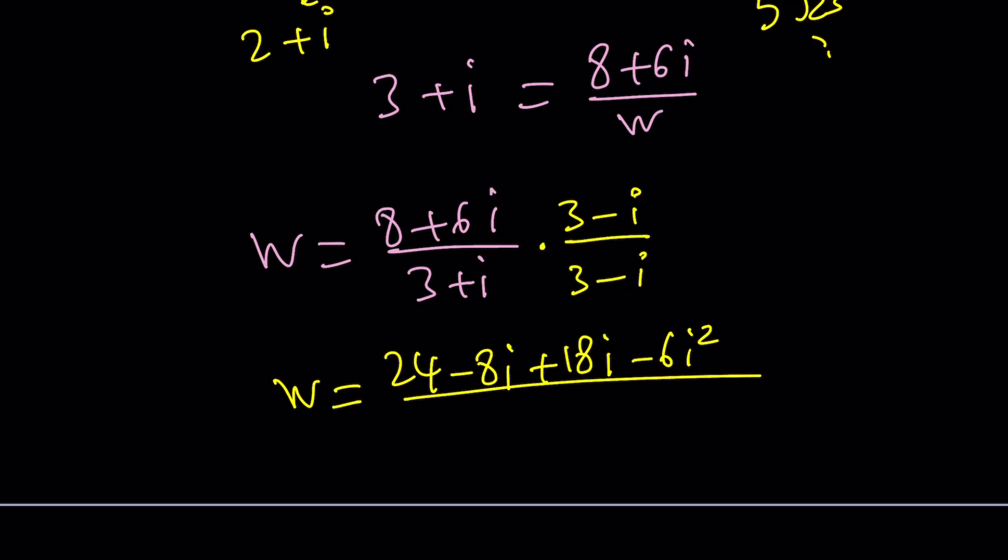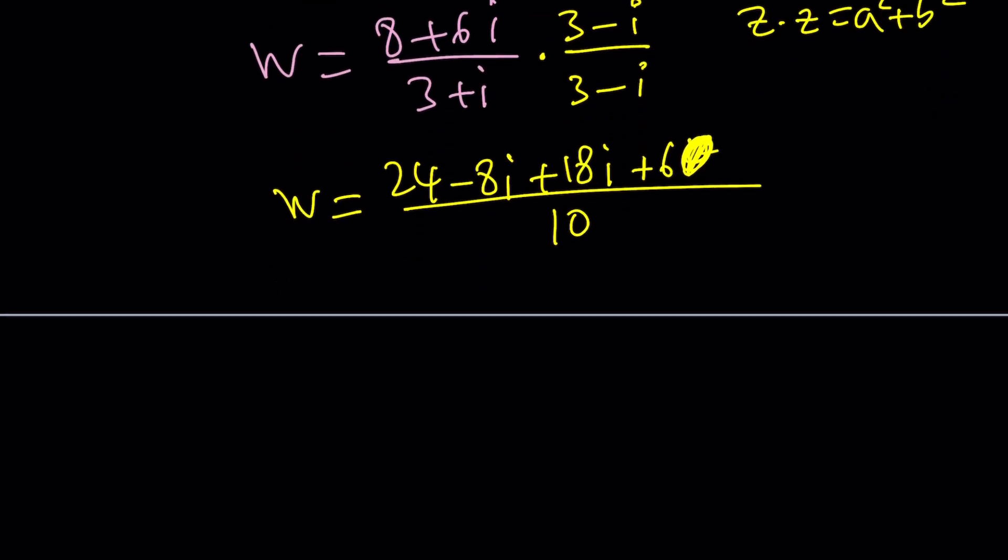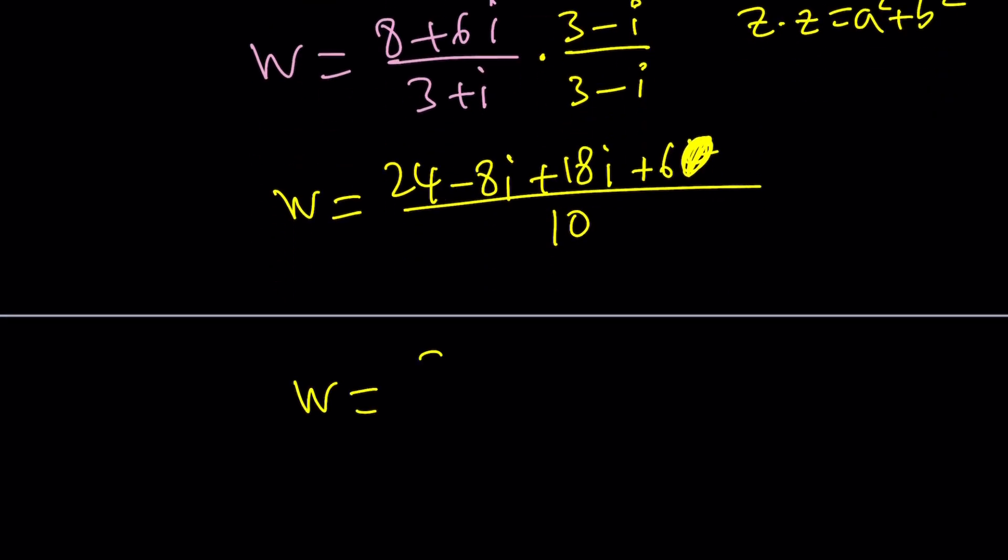Remember, when you multiply two conjugates z and z bar, you always get a real number and that is the real part squared plus the imaginary part squared. So it's going to be 9 plus 1, which is 10. Is that good? Now what is negative 6i squared? It's plus 6 because i squared is negative 1. 24 plus 6 is going to be 30. And this is going to be 30 plus 10i divided by 10, which is 3 plus i.